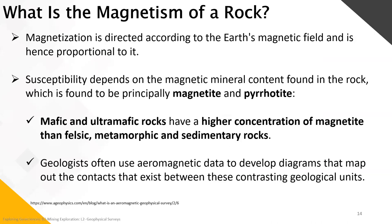A reminder about magnetism in rocks: magnetization is directed according to the Earth's magnetic field and is proportional to it. The susceptibility of a rock depends on the magnetic mineral content found in that rock — basically found within magnetic or pelleted minerals. As seen in block one, lesson one, mafic and ultramafic rocks have a higher concentration of magnetism than felsic, metamorphic, and sedimentary rocks — important to remember when using geophysical data. Geologists often use aeromagnetic data to develop diagrams mapping contacts between contrasting geological units.